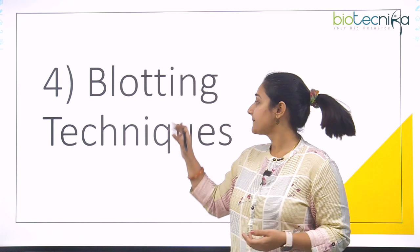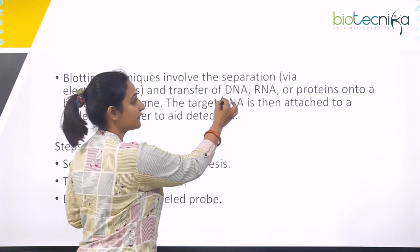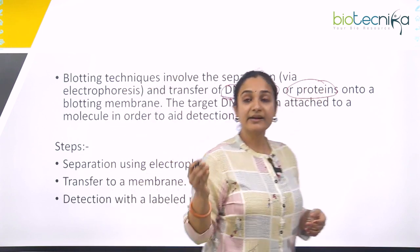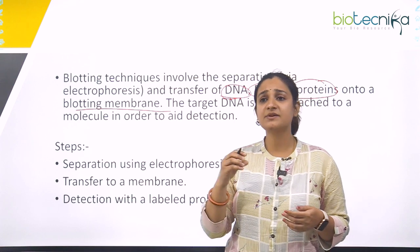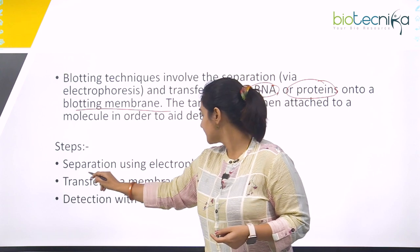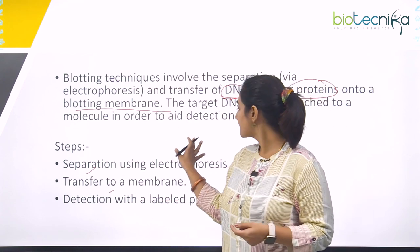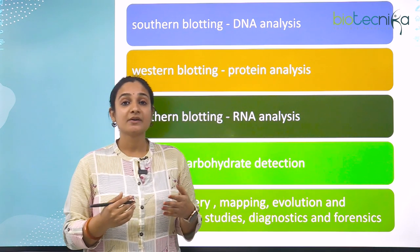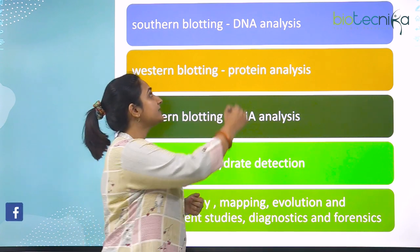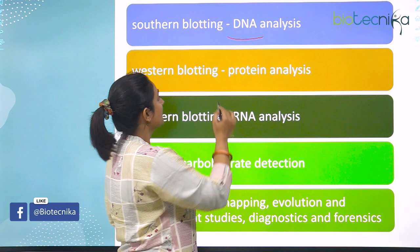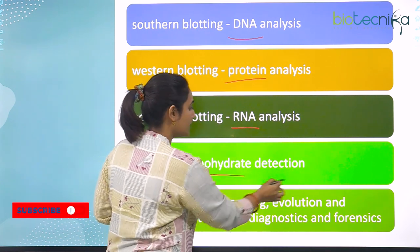The fourth technique is blotting. Blotting means the separation and then transfer of DNA, RNA, and proteins. They are first separated and then transferred onto a blotting membrane, which is then subjected to detection using different kinds of probes. The steps are: separation using gel electrophoresis, transfer to a blotting membrane, and detection with a labeled probe. There are four types of blotting: Southern blotting for DNA analysis, Western blotting for protein analysis, Northern blotting for RNA analysis, and Eastern blotting for carbohydrate detection.